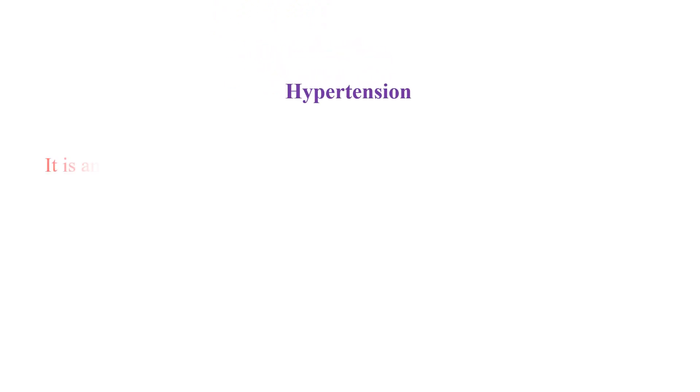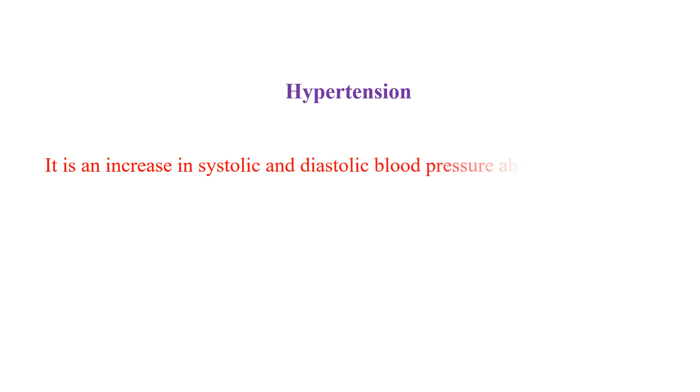Before entering into anti-hypertensive drugs, let us see the background of hypertension first, so that we can understand the mechanism of action of anti-hypertensive drugs very clearly. Hypertension is an elevation of systolic and diastolic blood pressure above normal — that is, above 140/90 mmHg.